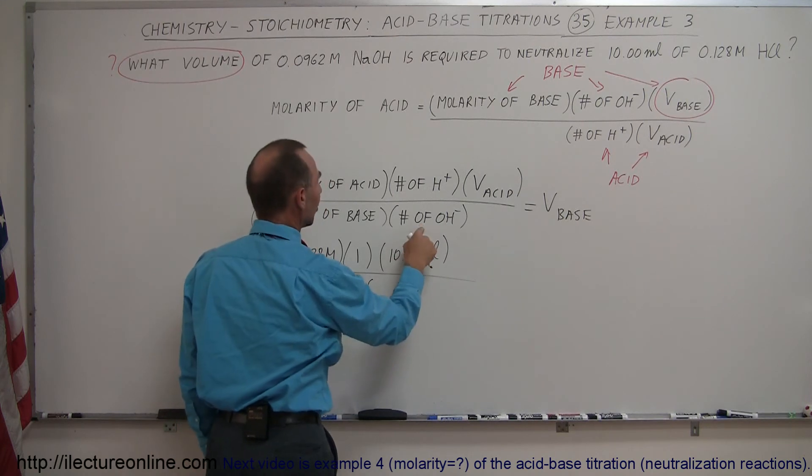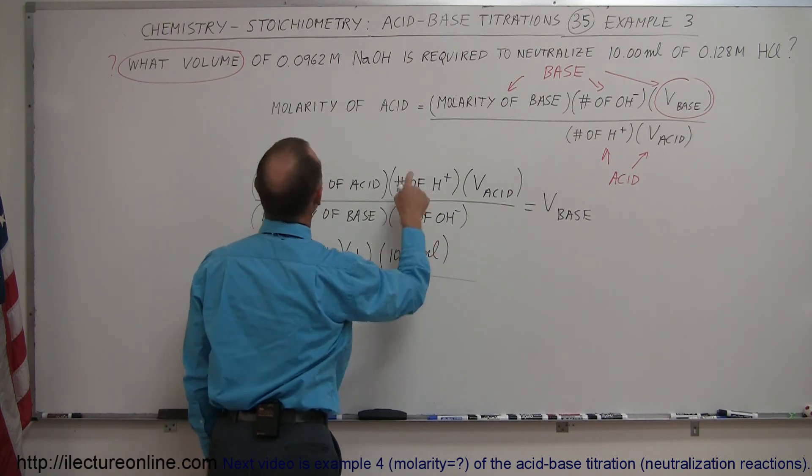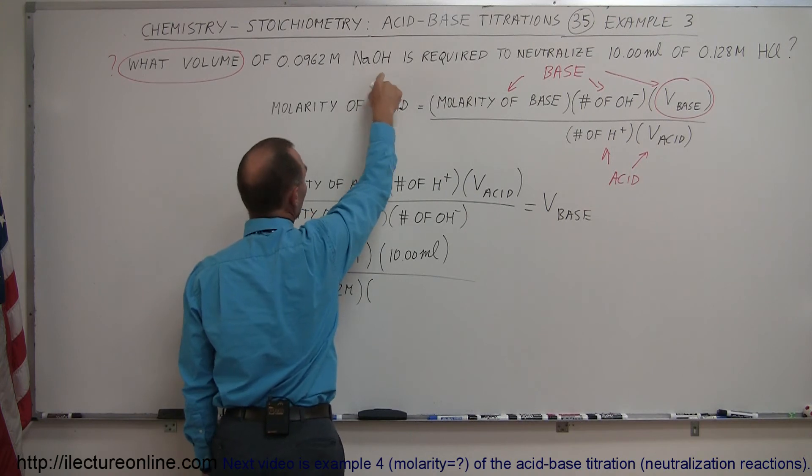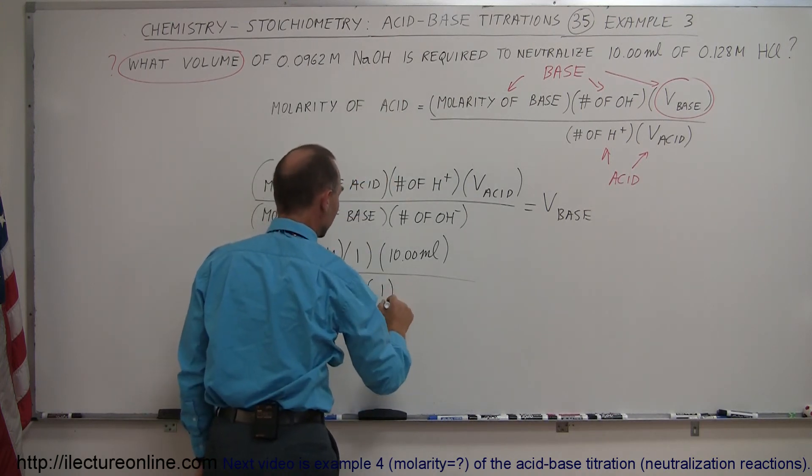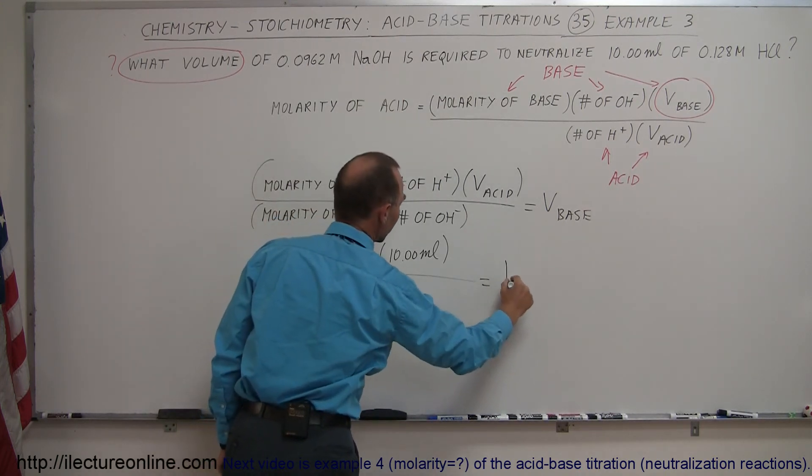And then the only thing left is the number of hydroxide ions produced. For sodium hydroxide there's only one of those per molecule, so just one. And that will give us the volume of the base.